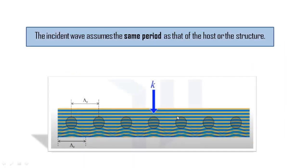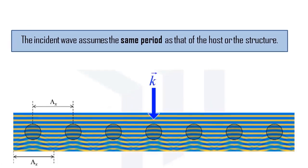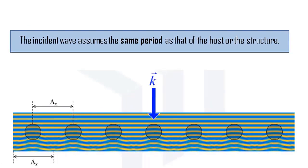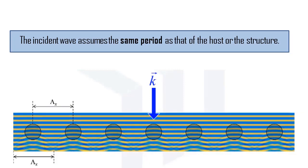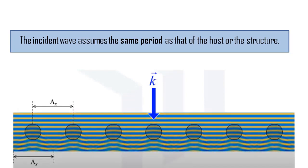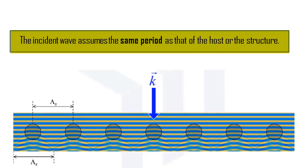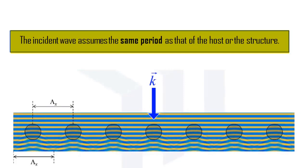This is yet another FDTD animation of a plane wave incident on a periodic structure. The plane wave has a wave vector K and is incident from the top. A very important observation is to be made. The incident wave assumes the same period as that of the host or the structure. It doesn't take on the same shape. It takes on the same period.